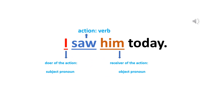For example: 'I saw him today.' 'I' is the doer of the action, so it is the subject pronoun. 'Saw' is the action or the verb. 'Him' is the receiver of the action, or the object pronoun. So 'I' is the subject pronoun and 'him' is the object pronoun.